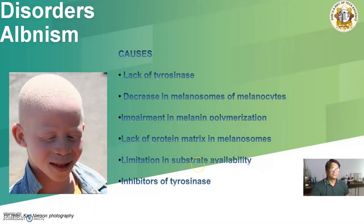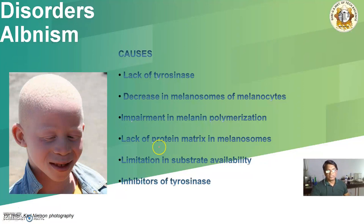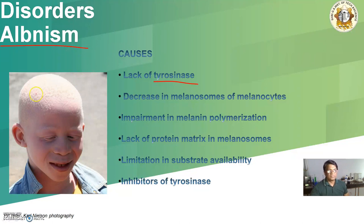The disorder of albinism arises from: lack of tyrosinase enzyme, decreased melanosomes in melanocytes, impairment in melanin polymerization, lack of protein matrix in melanosomes, limitation in substrate availability, or elimination of tyrosinase enzyme. All these are linked to the tyrosinase enzyme — the process of melanin synthesis is stopped. This leads to albinism: white skin, corneal disorders, and pupil disorders present at birth.